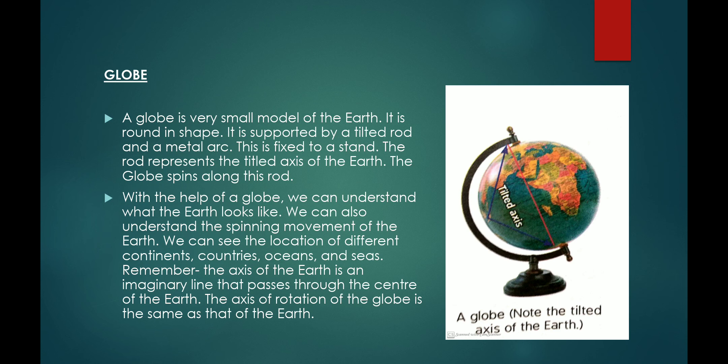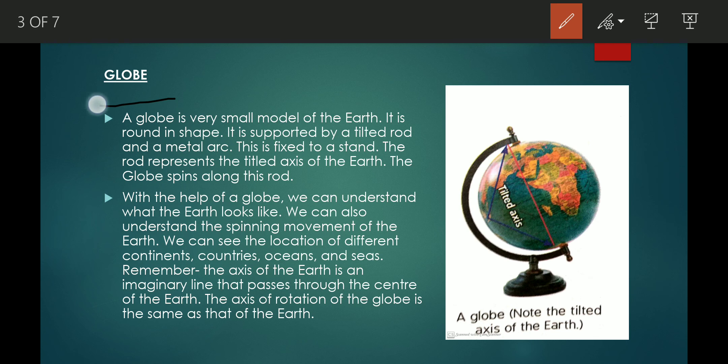What is a globe? A globe is a very small model of earth. It is round in shape. It is a miniature form of the earth.